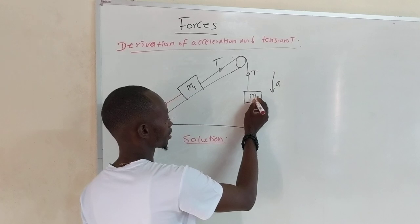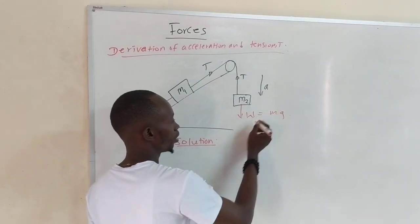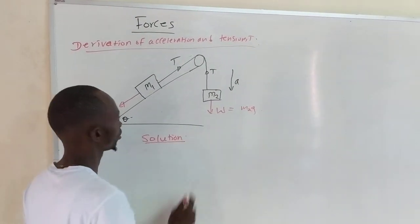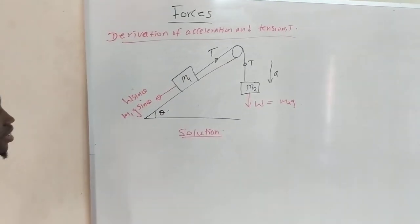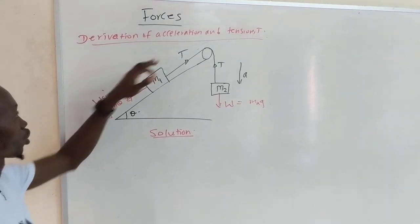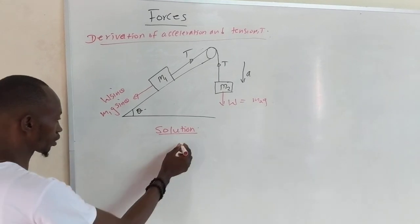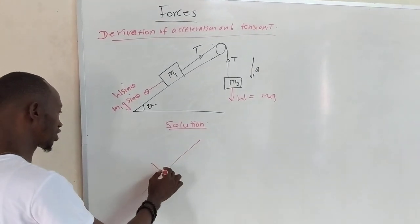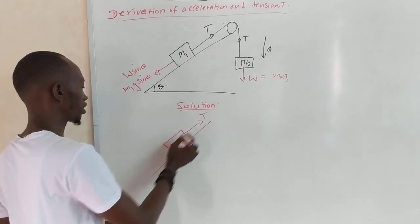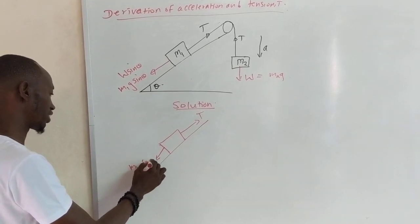Since we know weight is mass times gravity and the mass is M1, it is going to be M1G times sin theta. So this is the force that will act here along the plane. For the hanging mass, this object will act downward. Since the mass is labeled as M2, it is going to be M2G. These are the things that we need to add when we complete the diagram. So how can we derive A and T? Let's consider the forces parallel to this plane — the tension T is being pulled towards one side and the weight component M1G sin theta acts the other way.